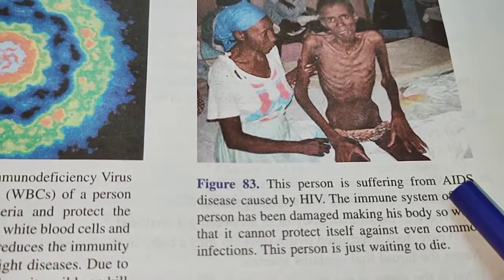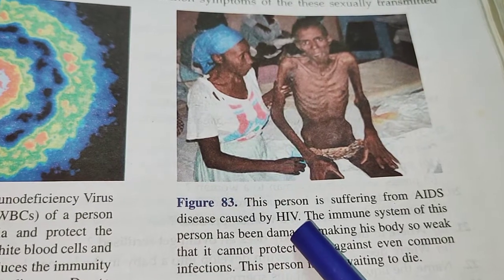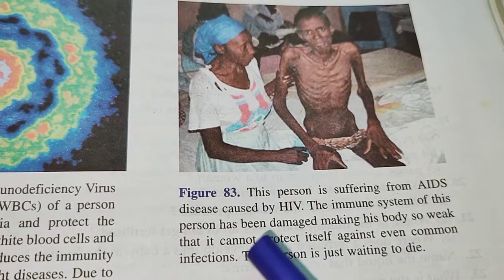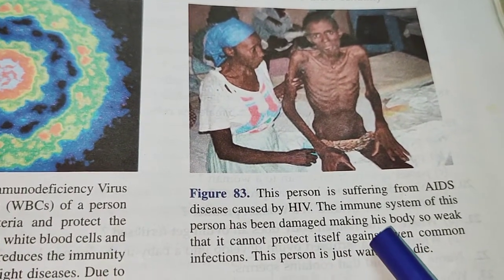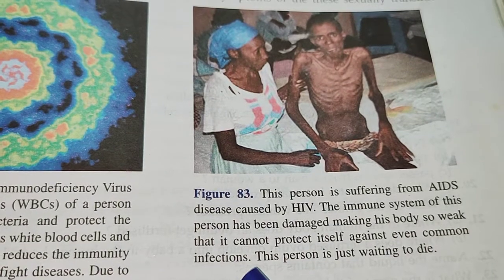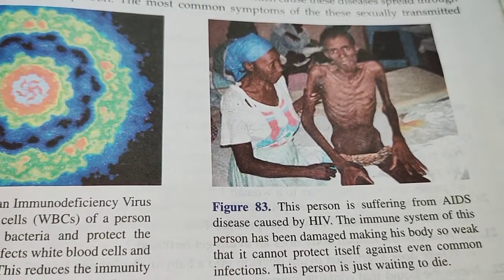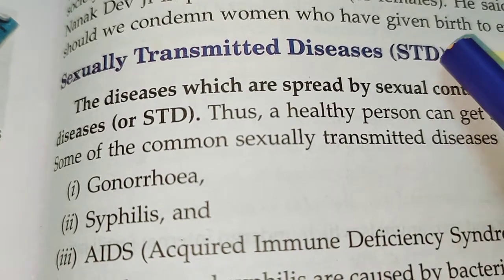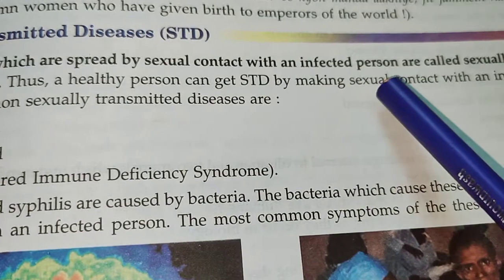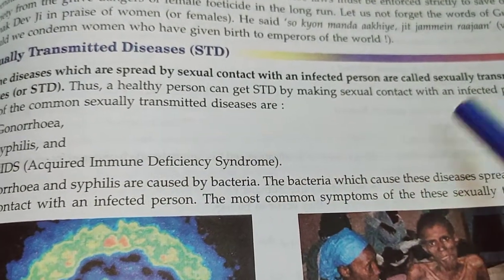Many of you have heard about AIDS. This picture shows a person suffering from AIDS, which is caused by the Human Immunodeficiency Virus, or HIV. In this disease, the immune system of the patient is damaged, making the body so weak that it cannot protect itself against even common infections like cold and cough. AIDS is one of the sexually transmitted diseases. The diseases which are spread by sexual contact with an infected person are called STDs. A healthy person can get an STD by making sexual contact with an infected person.